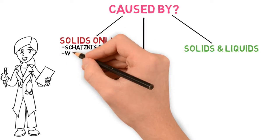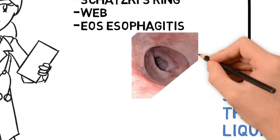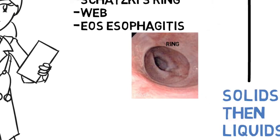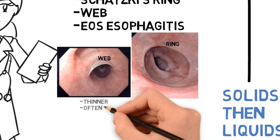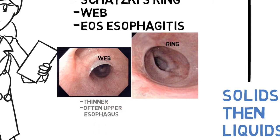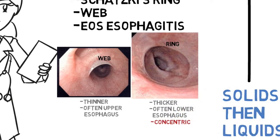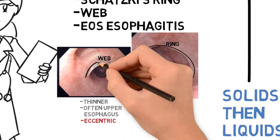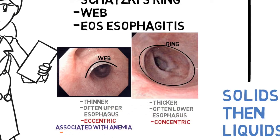Solids only — we're talking about things like Schatzky's ring, webs, or eosinophilic esophagitis. An esophageal web is thinner and often in the upper esophagus, versus a ring which is thicker and often lower esophageal and concentric, going all the way around. A web is eccentric, going about halfway around, and is also associated with anemia — we call this Plummer-Vinson syndrome, although we don't really know why the anemia occurs.